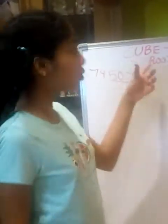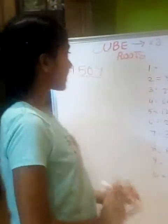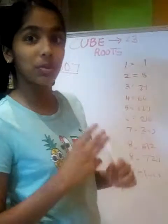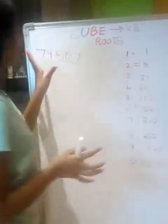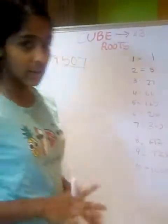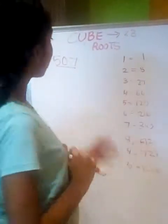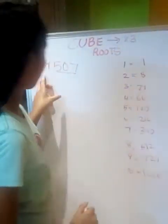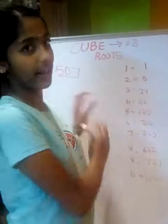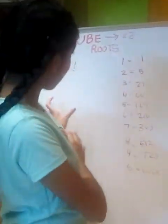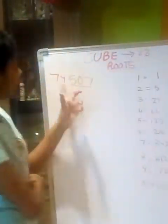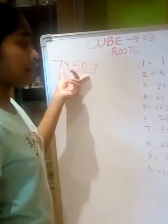Now, what are cube roots? We discussed that a cube means a number repeated 3 times. Root means going backwards — cube root means, given the answer, we find the original number. So if we have the cube, we work backwards to find what number was multiplied 3 times to get it. That original number is the cube root.